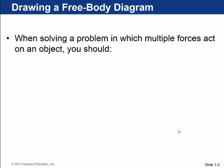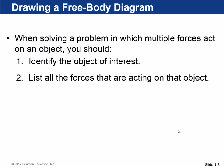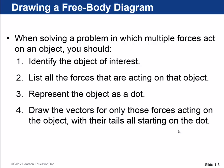The steps for drawing a free body diagram are: number one, identify the object of interest, the thing that the forces are acting on. List or think about all the forces that are acting on that object. Then you can draw a dot for the object. And lastly, draw the vectors for all those forces acting on the object with their tails starting on the dot.